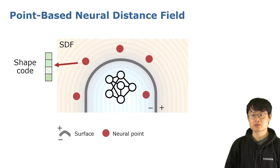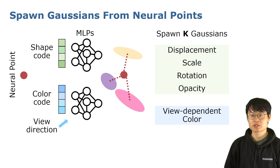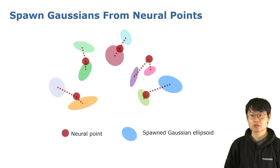Let's look at this 2D toy example. In PINSLAM, we use a set of neural points stored in shape codes to model the SDF. To additionally model the radiance field, we spawn k Gaussian primitives from each neural point by decoding its shape and color code. We optimize the spawned Gaussians by minimizing the difference between rendered and training images.